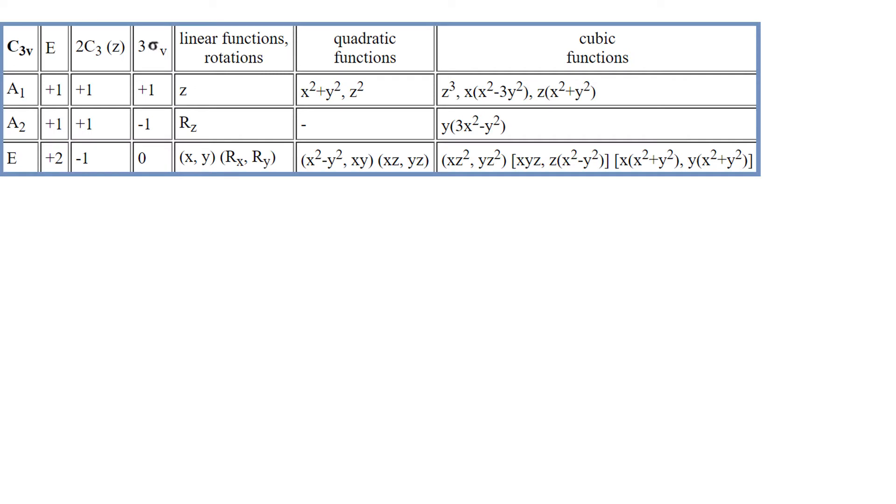So here is the character table for C3V. For now, please only pay attention to this part. Here all symmetry operations are listed and grouped into so-called classes. The rotations are together and reflections are together. On the surface, it doesn't seem to be a big deal.